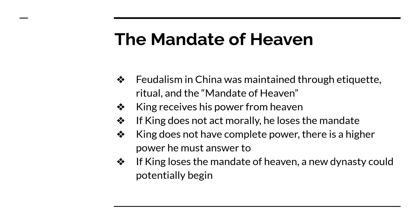This shows that the king does not have complete power — the king must answer to a higher power above. It's supposed to be a moral code: even if the king has to obey somebody, then the people should obey something as well, and all the power flows uphill. If the king loses the Mandate of Heaven, the dynasty could be replaced and a new dynasty could begin.